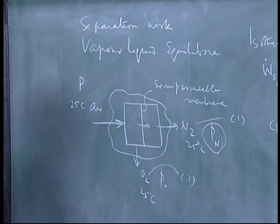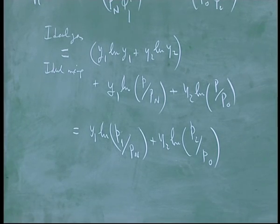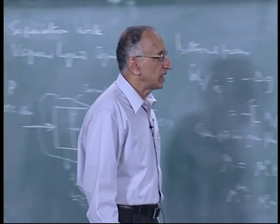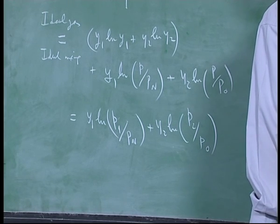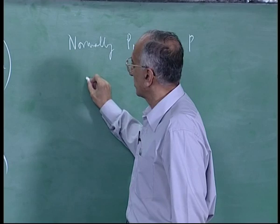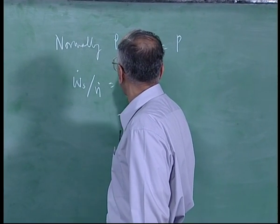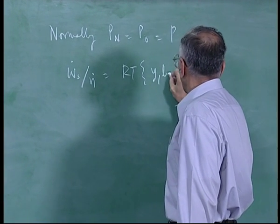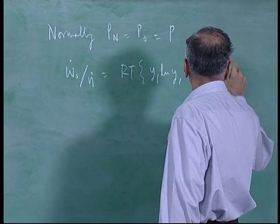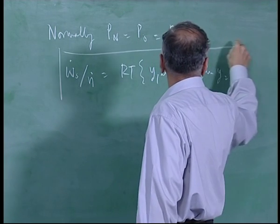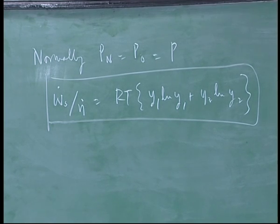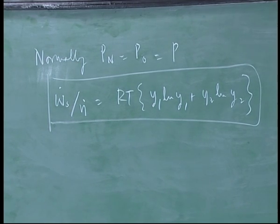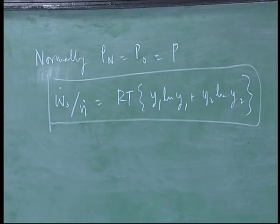This is what you do in regular reverse osmosis where you separate solutes from the solvent. But in this case right now, you have no work done at all but you actually want this usually at P. So normally you get everything at one atmosphere at the same pressure. Normally Pn is equal to Po is equal to P, in which case you have work done Ws dot by N dot is simply RT times y1 log y1 plus y2 log y2.